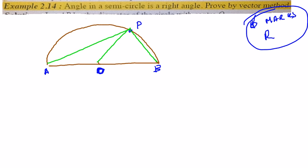So if I have to prove an angle in a semicircle is a right angle, it obviously means this angle. So I have to prove that this angle here, angle APB is equal to 90 degrees. So this is what I have to prove. To prove that angle APB is 90 degrees.